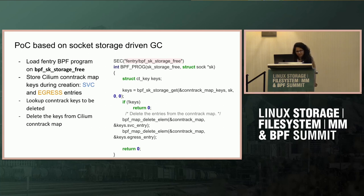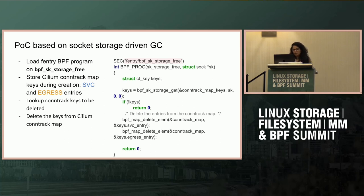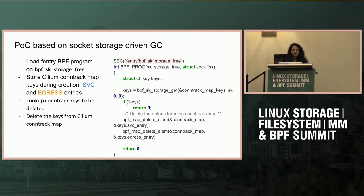Going back to the comment about storing tuples in a separate map: that brings us back to the original problem of coming up with the right map size, which is tricky. Someone suggests an INET socket close hook — you can clean up from that place and it's guaranteed to run. But in that case, we'd have to iterate over the map to find all related entries, unless we can look up socket storage from that hook and then delete the relevant entries.